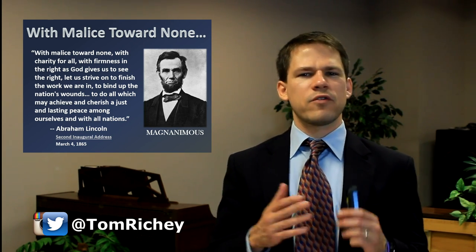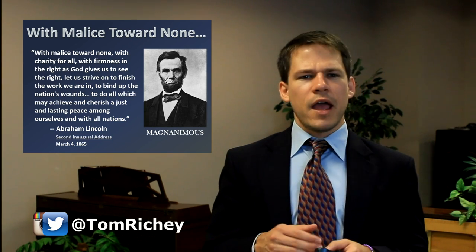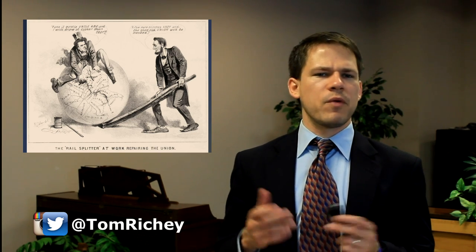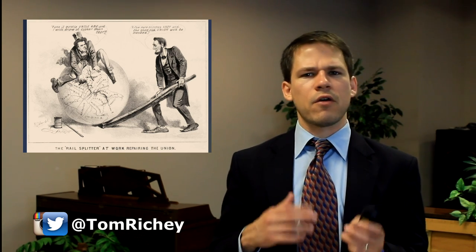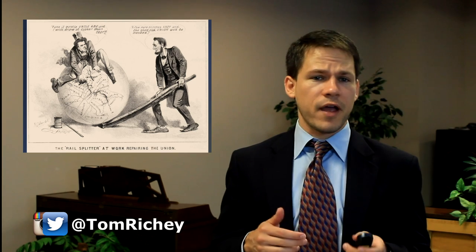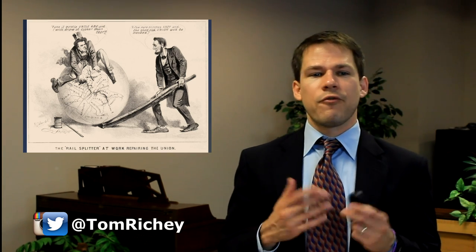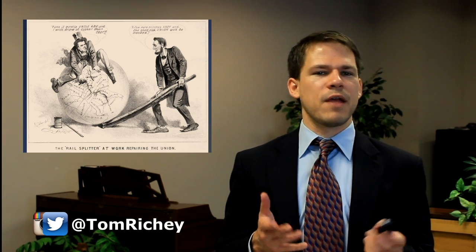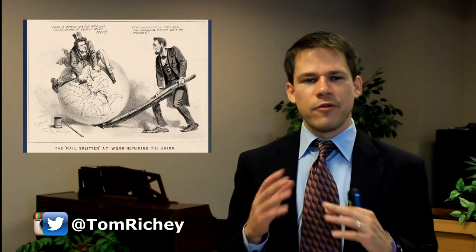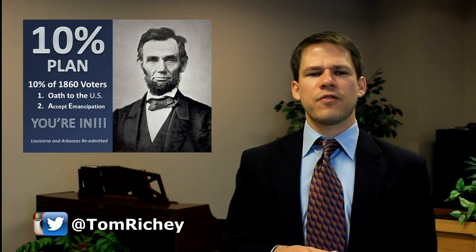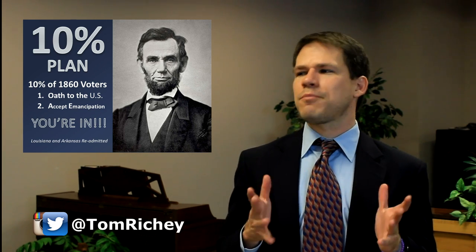Abraham Lincoln wants to be a magnanimous victor, and his presidential reconstruction plan is very lenient toward the South. When we say presidential reconstruction, we talk about Lincoln and his successor, Andrew Johnson. Lincoln is a rail splitter and Johnson is a tailor — playing on their humble beginnings. Lincoln begins his reconstruction with the 10% plan.